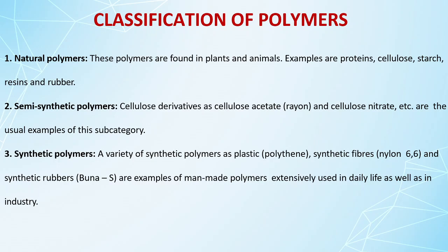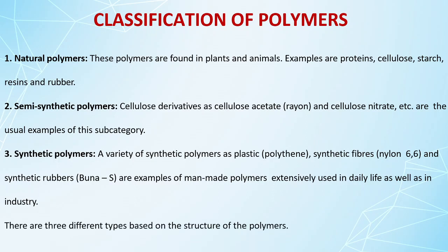Synthetic polymers are directly man-made with the help of chemicals — no natural precursor is used. Examples include Buna-S, Nylon 6-6, and polythene. These synthetic polymers are extensively used in daily life.